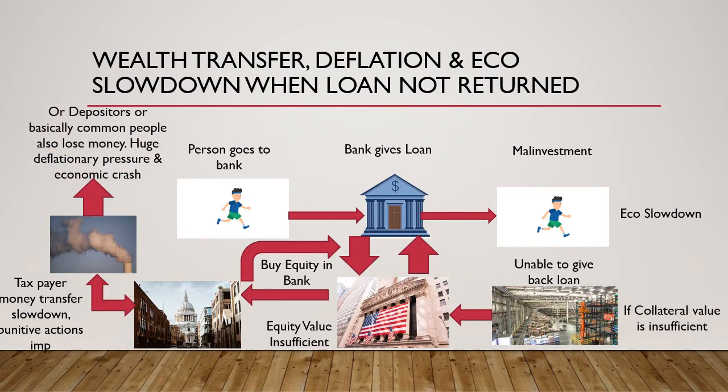In the fourth scenario, the depositors — in other words, the common people — will lose money. This would mean the banks have to write off large amounts of loans from their balance sheets, causing enormous deflationary pressures on the economy and an eventual economic crash.